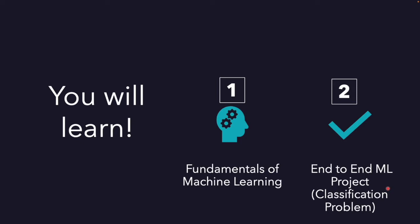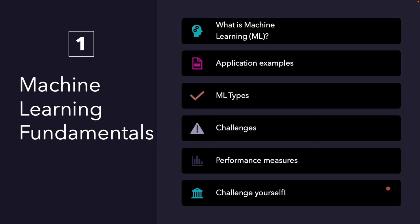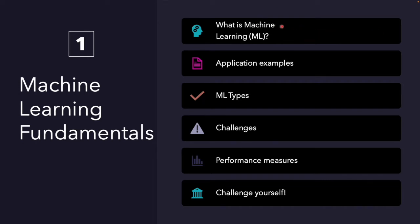Now let's see the outline of the first part. First of all, you will learn what machine learning is and what it is not — the difference between a machine learning-based approach and traditional ones. After understanding what machine learning is, we will see some application examples to understand the current capabilities of machine learning.